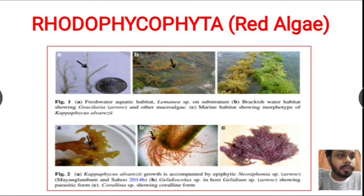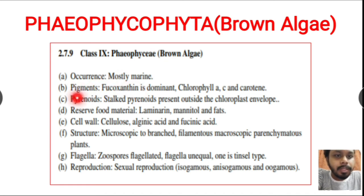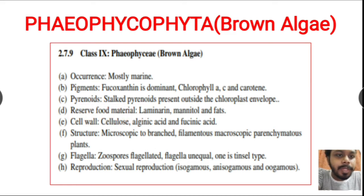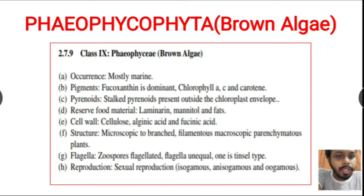Next is phaeophyta or brown algae. They are also mostly present in marine water. Their predominant pigment is fucoxanthin. Pyrenoids are present outside the chloroplast envelope. Reserve food material is laminarin. Cell wall is made up of cellulose, alginic acid, and fucinic acid. Their structure ranges from microscopic to macroscopic branched, filamentous, or parenchymatous forms.